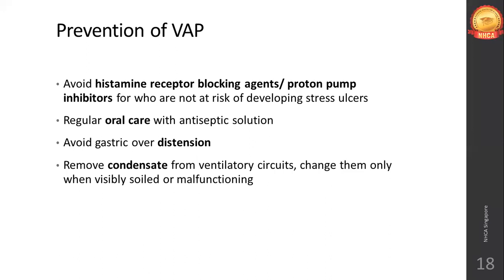Remove the condensate from the ventilatory circuits, and change them only when they are visibly soiled or malfunctioning. Condensate formation happens because cool air traveling through the ventilator's circulatory pipes forms into a white-colored condensate. Particles of condensate can travel through the ventilator air into the lungs and cause further infections. Only when visibly soiled, remove and change the tubings.